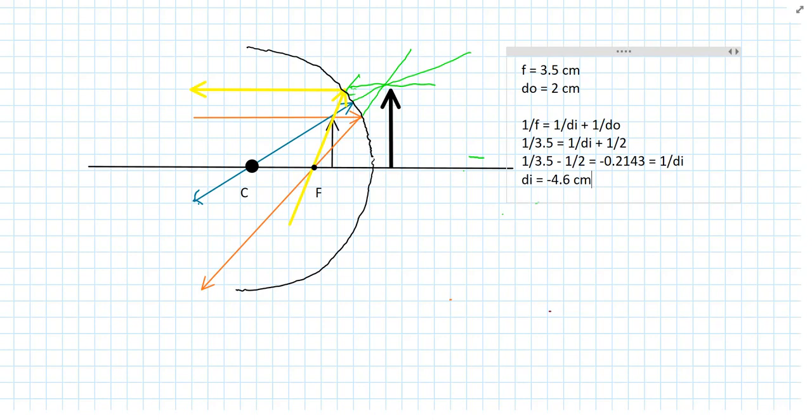Now, the magnification is the reciprocal of di over do, minus di over do, and that would be minus a negative 4.6 divided by 2, which is a positive 2.3. That tells us that the image is going to be upright, right side up. We've got a positive magnification. Right side up agrees with what we got in our ray diagram. This also says that the image should be about twice as big as the object. Well, we didn't get twice as big in the ray diagram, but we did get, obviously, quite a bit bigger. So, there again, qualitatively, our ray diagram is okay.